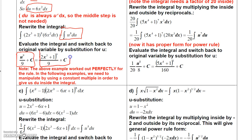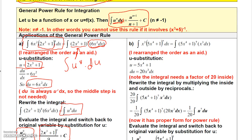That's how you integrate. In this example, it worked out perfectly because the remaining part turned out to be du. But if that 6 hadn't been there, then this wouldn't be du. However, there is a way to make up for a missing constant, and I'll show you that in the next example. If you look at the integral of x cubed times 5x to the 4th plus 1 to the 7th power...